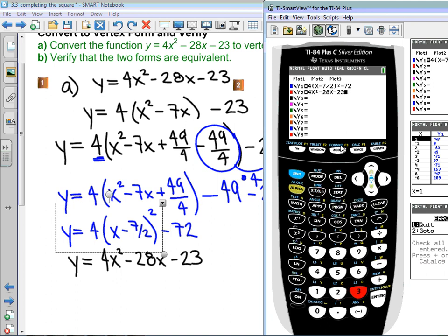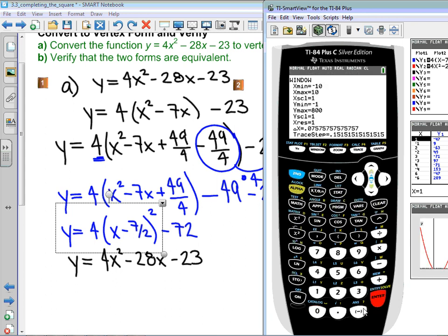And because my vertex is really ugly, right, it's at 3.5 comma negative 72, I just want to make sure that we see all that. So, I'm going to make my x min negative 10, my x max positive 10, but I'm going to make my y min negative 100, just to make sure we see the vertex. So, y min is negative 100, and we'll make y max, that will make it symmetrical, we'll make it positive 100.